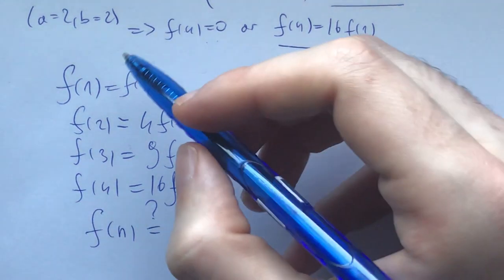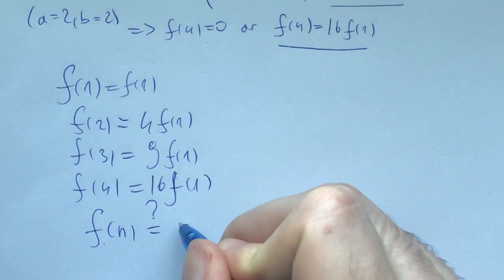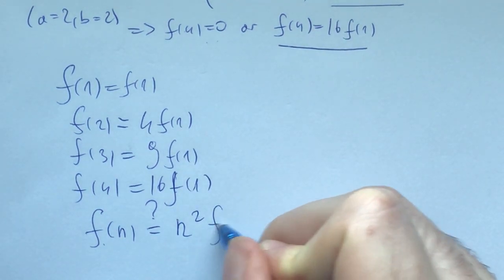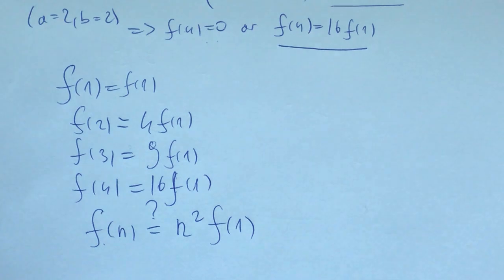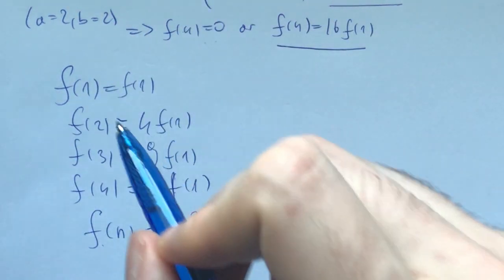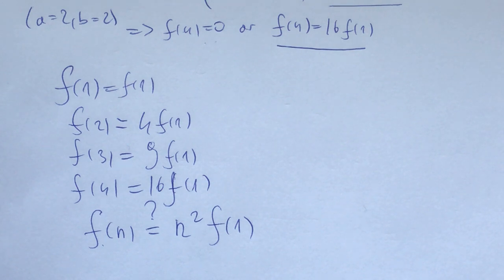The other case is f(4) = 16f(1). Now notice: f(1) = f(1), f(2) = 4f(1), f(3) = 9f(1), f(4) = 16f(1). What would your conjecture be for f(n)? The pattern suggests f(n) = n²·f(1). Let's try to prove this — pause for 5 minutes and try it yourself. The method is induction!